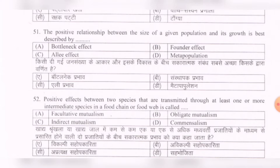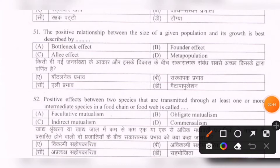Question 51: The positive relationship between the size of a given population and its growth is best described by which of the following? Options are: bottleneck effect, founder effect, Allee effect, metapopulation. The correct option is C — Allee effect.